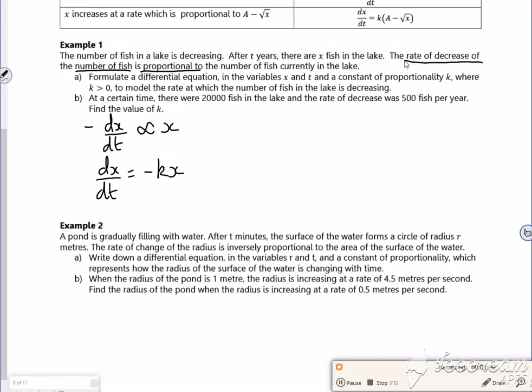So that's that part done. It's awkward because my parts don't quite reflect those, so I'm looking in different places. Part B says, at a certain time there were 20,000 fish and the rate of decrease was 500 fish per year.